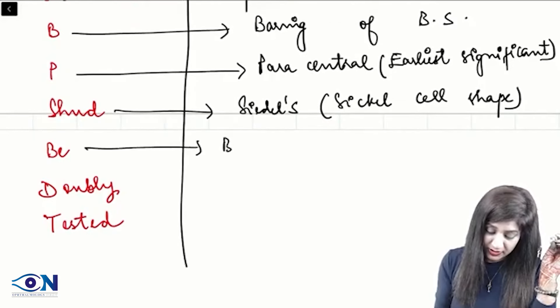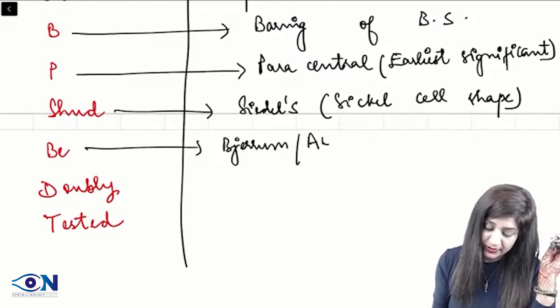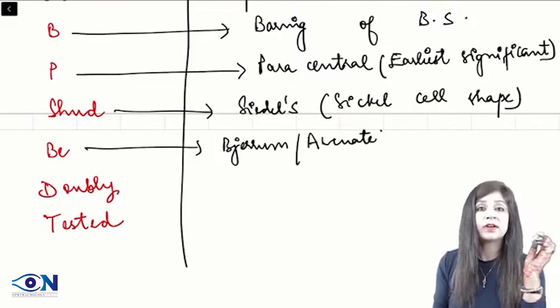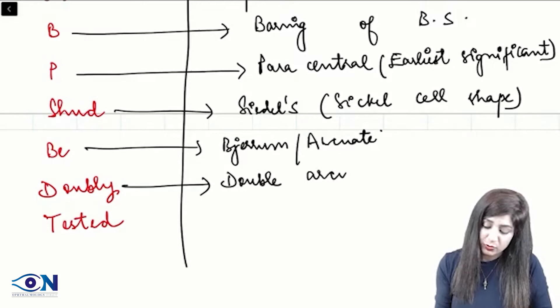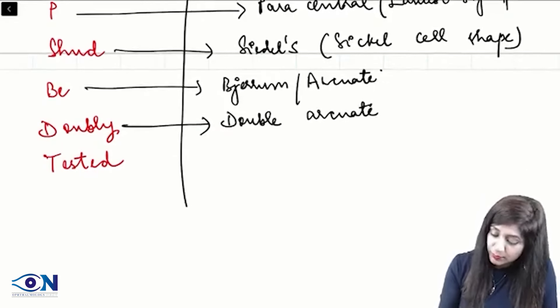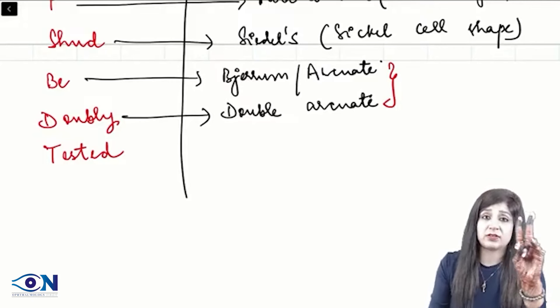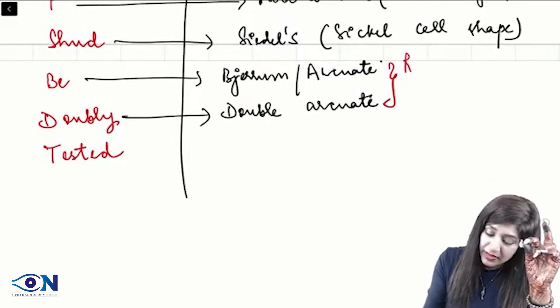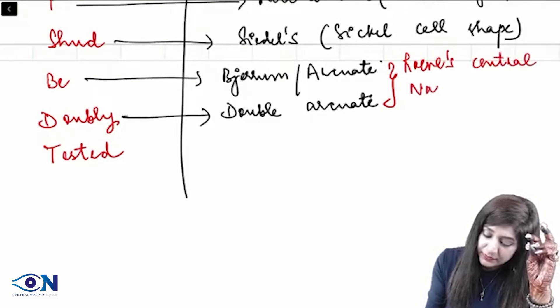Then next is the Bjerrum scotoma. Bjerrum scotoma is also called as the arcuate scotoma. Right, while doubly say we have double arcuate. This is the double arcuate scotoma. So, one is the arcuate scotoma and one is a double arcuate scotoma. And due to the unequal contraction of the arcs, because we have two arcuate scotomas, we can have the Ronne's central nasal step.